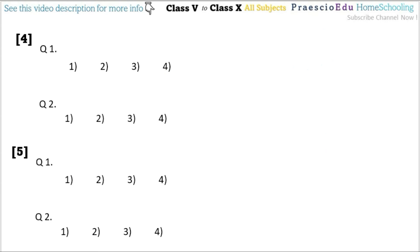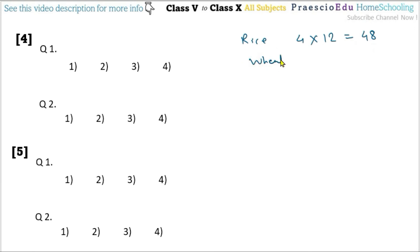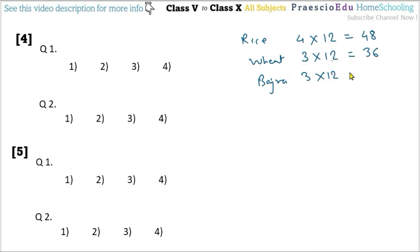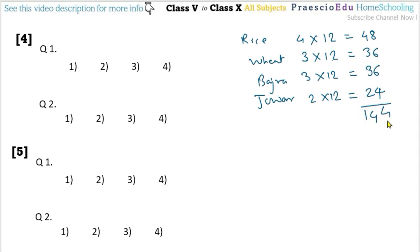Pictograph number 4 shows types of food grains and number of sacks. Each picture represents 12 sacks. Rice has 4 pictures: 4×12 = 48 sacks. Wheat has 3 images: 3×12 = 36 sacks. Bajra also has 3 images: 3×12 = 36 sacks. Jowar has 2 pictures with 12 sacks each: 2×12 = 24 sacks. Total is 144 sacks.